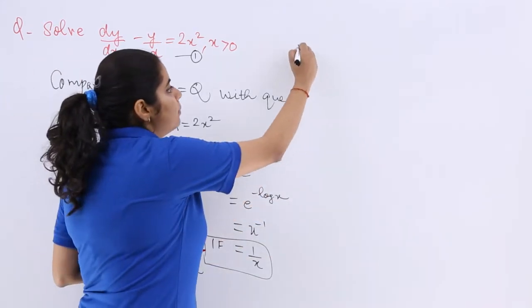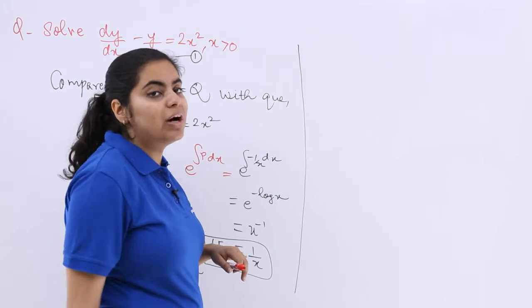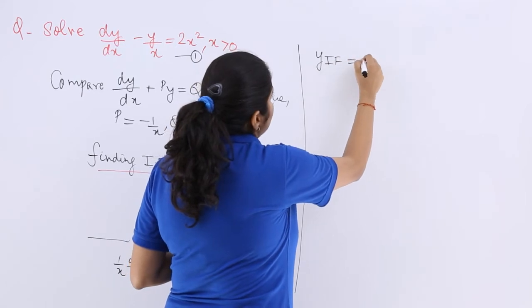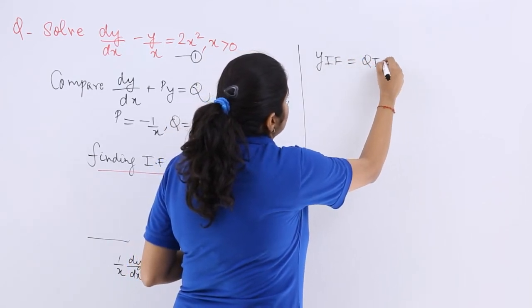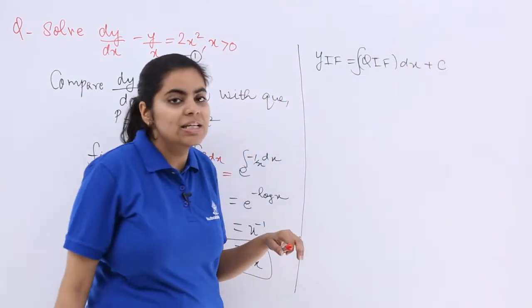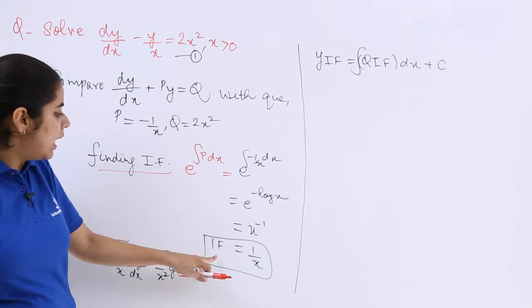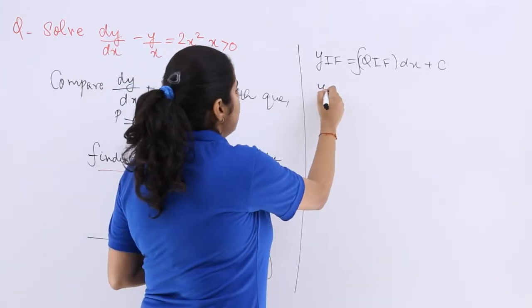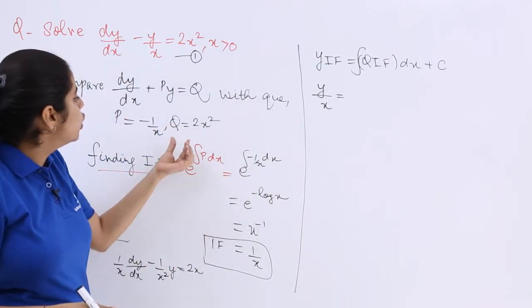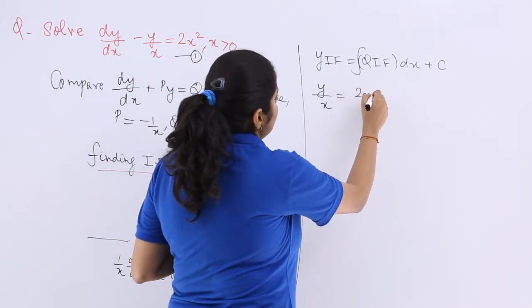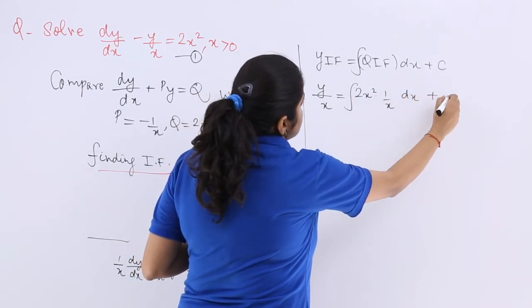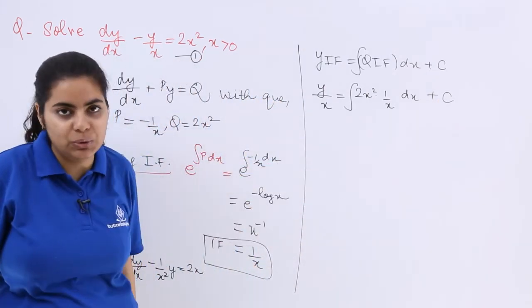Now for the further part of the solution I have one particular formula that y · IF = ∫(q · IF)dx + c, right? So y · IF is what? y into integrating factor makes it y/x which is equal to ∫(q · IF)dx plus c.